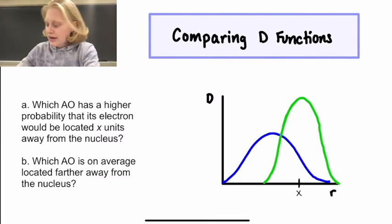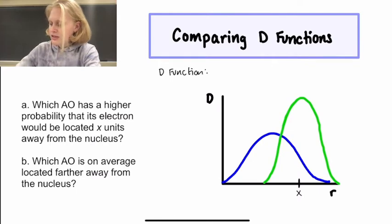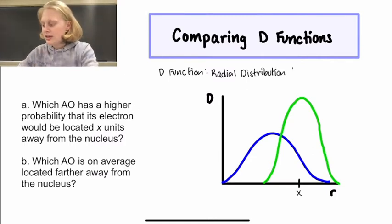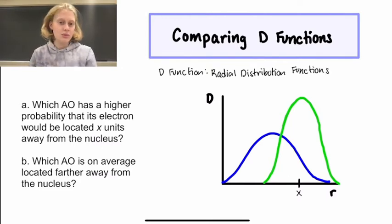So just as a reminder, the d-function is the radial distribution function, and this means that it tells us about the distribution of locations that the electron is located in a given atomic orbital.